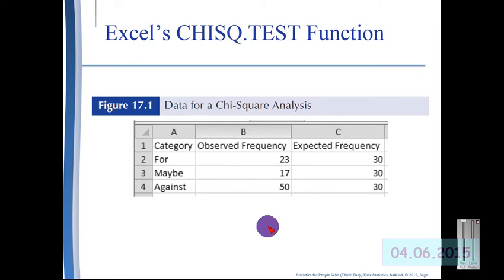Now Excel does have a chi-square test function, but that does not give us our chi statistic, but rather it gives us our probability. All we have to do is set up our observed frequency in one column or row, and then set up our expected frequencies in columns or rows.